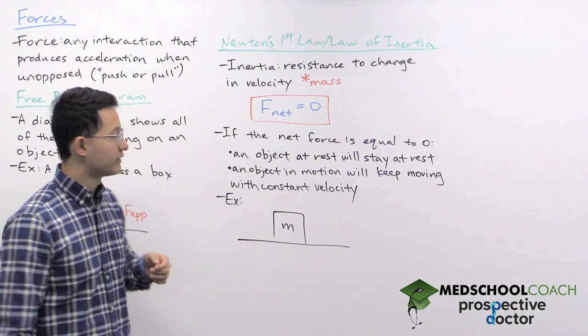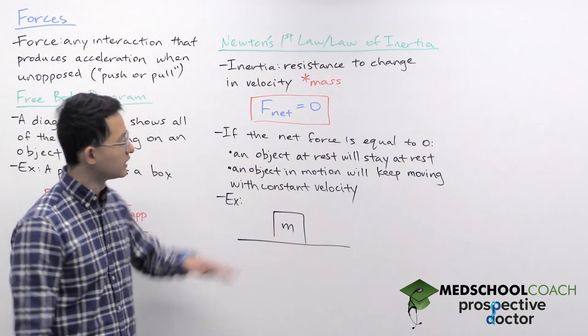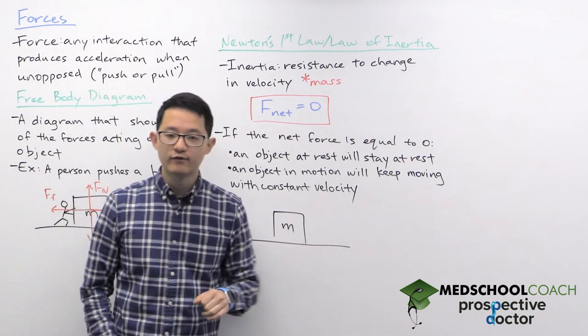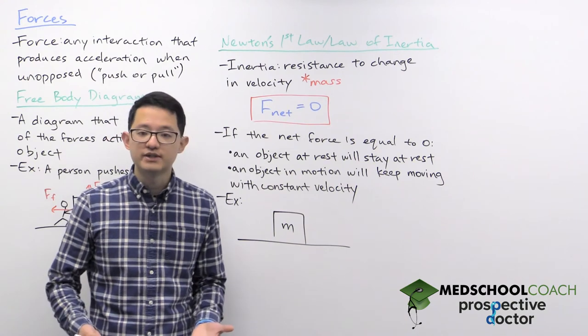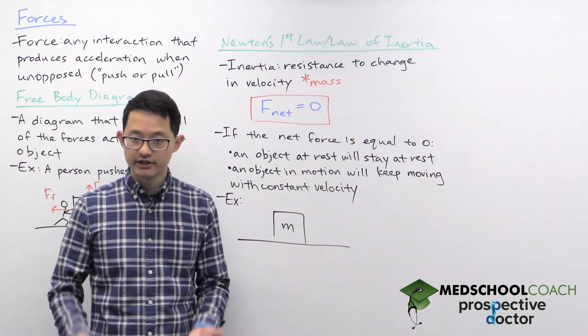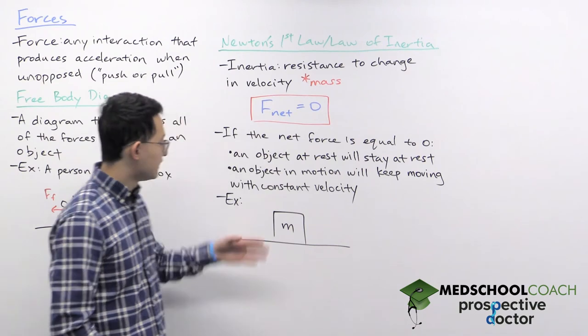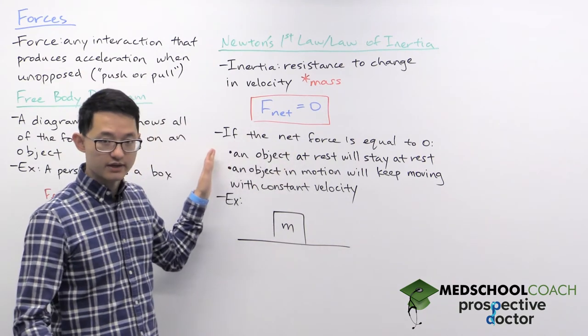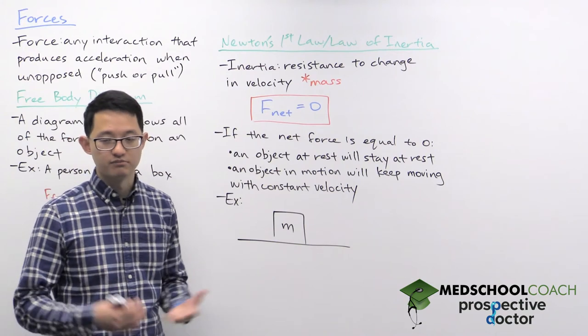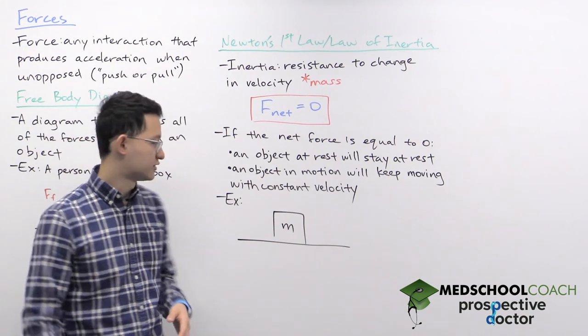Okay, so another way we can represent Newton's first law is with an equation, which is this one right here. Net force equals zero. If the net force equals zero, then the object isn't experiencing any acceleration. So again, if that's the case, then an object at rest will stay at rest. It has no velocity and will maintain no velocity.